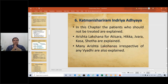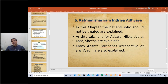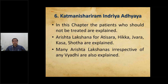The sixth chapter especially explains patients who should not be treated. Arishtas specially explained include those related to Atisara (dysentery), Hikka (hiccup), Jwara (fever), Kasa (cough), and Shotha (swelling). These five diseases are covered in this chapter. Also, general Arishta Lakshanas irrespective of the specific disease are explained.